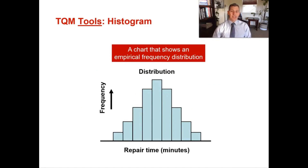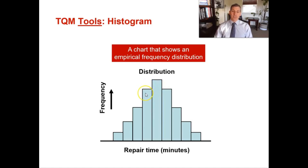The next TQM tool is a histogram — a chart that shows an empirical frequency distribution, generally between time or events. In this example you can see repair time versus frequency. If the center of the distribution represents a 10-minute oil change, the bars to the left show how many oil changes took 9, 8, 7, or 6 minutes, while bars to the right show those taking 11, 12, 13, or 14 minutes. It's an empirical frequency distribution showing how often events occur, helping you identify problems.